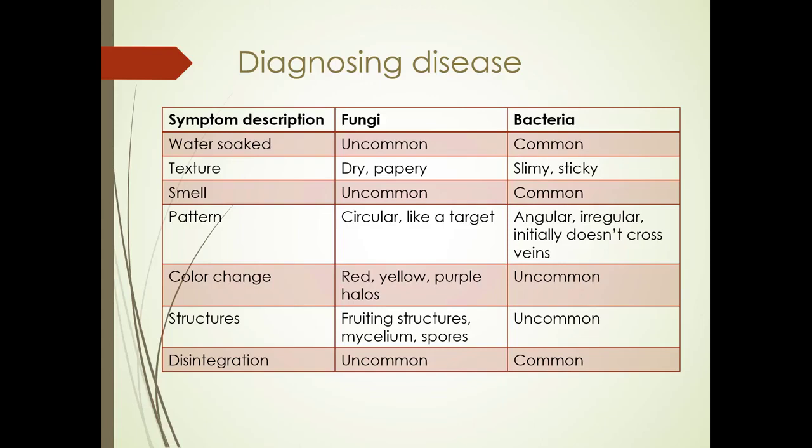Color changes such as red, yellow, and purple halos are uncommon in bacteria, although we will see some coming up that have yellow halos. Fruiting structures are very uncommon for bacteria, whereas fungi have mycelium and spores. Tissue disintegration is uncommon in fungi but common in bacteria.